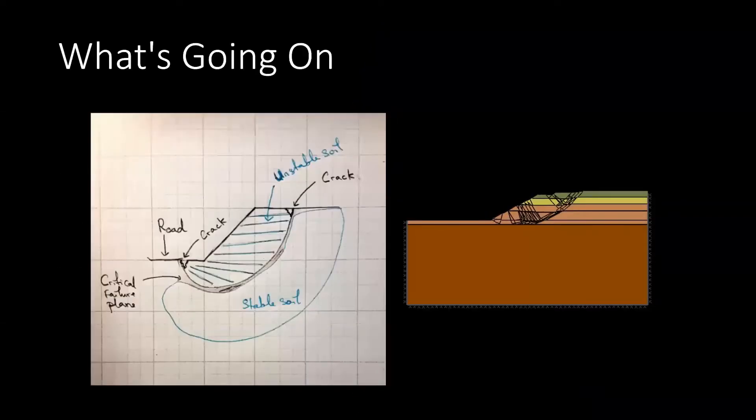Right here on the side, we have two visuals. In one we can see the movement of the unstable slope. As we can see, the movement of this unstable slope results in the cracks we can see in the picture to our left.